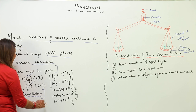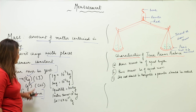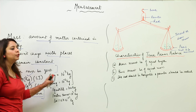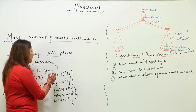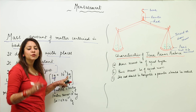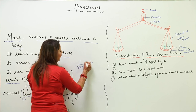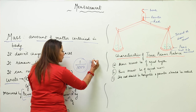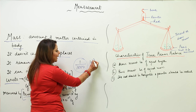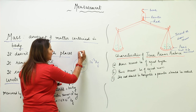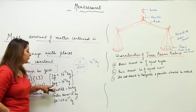Now let's also learn the bigger units and how to convert them. In 1 gram, there are 1/1000 kg, which is 10 to the power minus 3 kg. So 1 gram equals 10⁻³ kg. For milligram, it is 10⁻⁶ kg. These conversions are important for solving numerical problems.